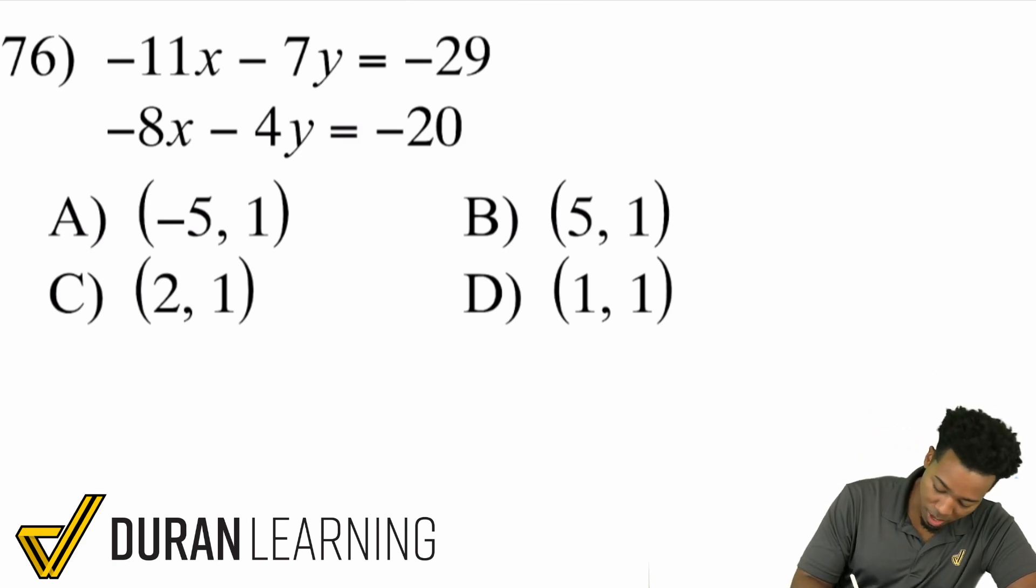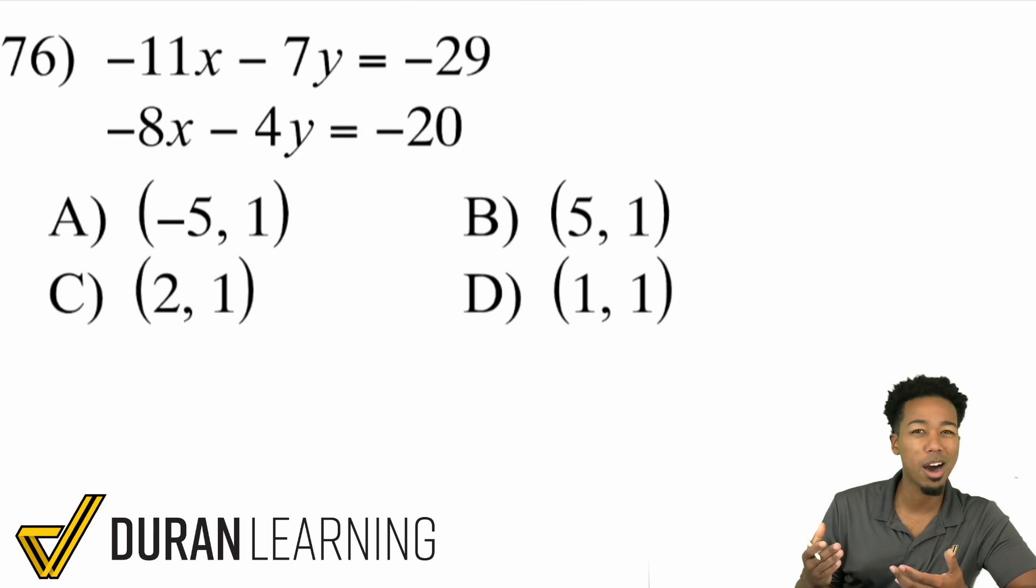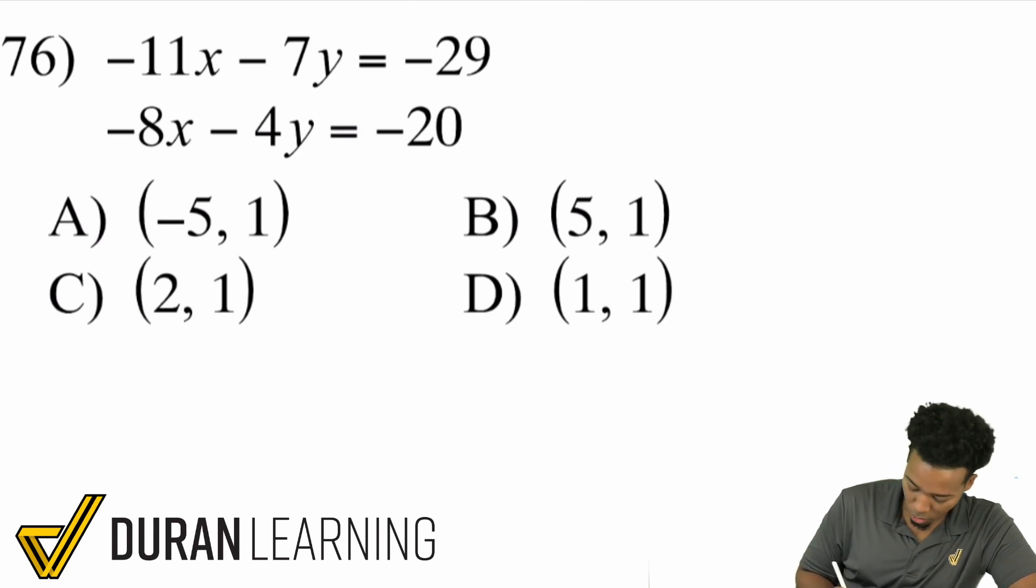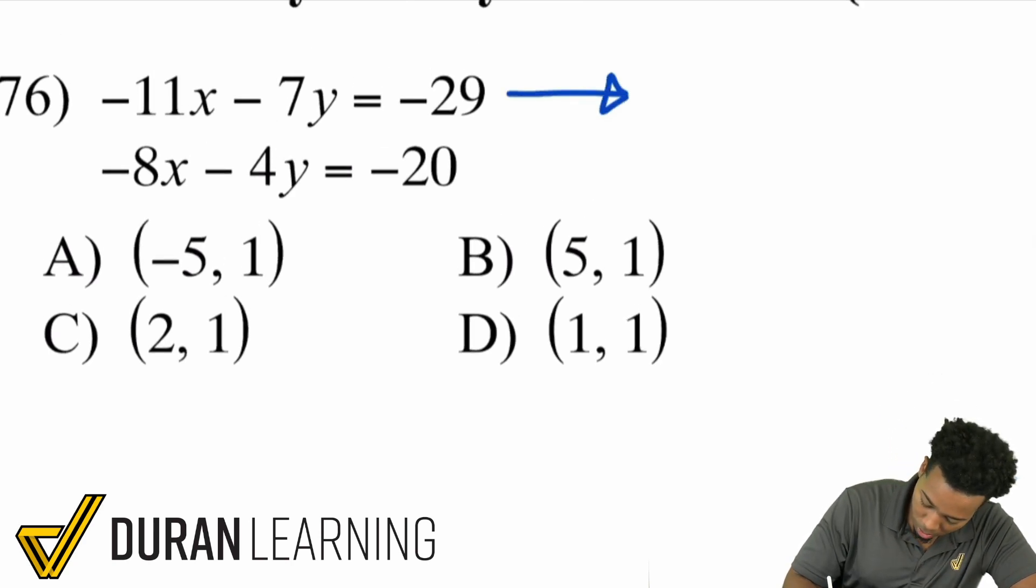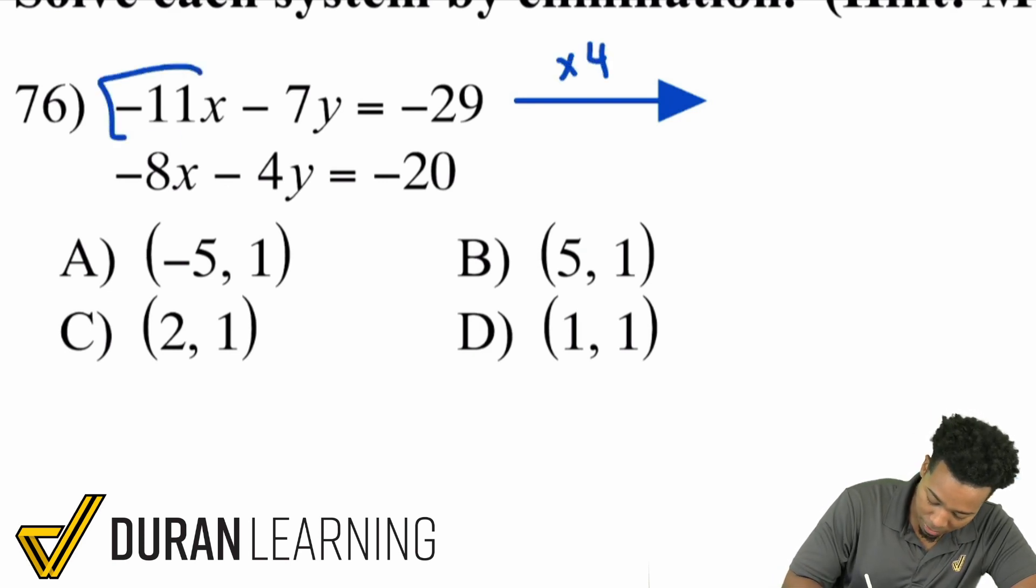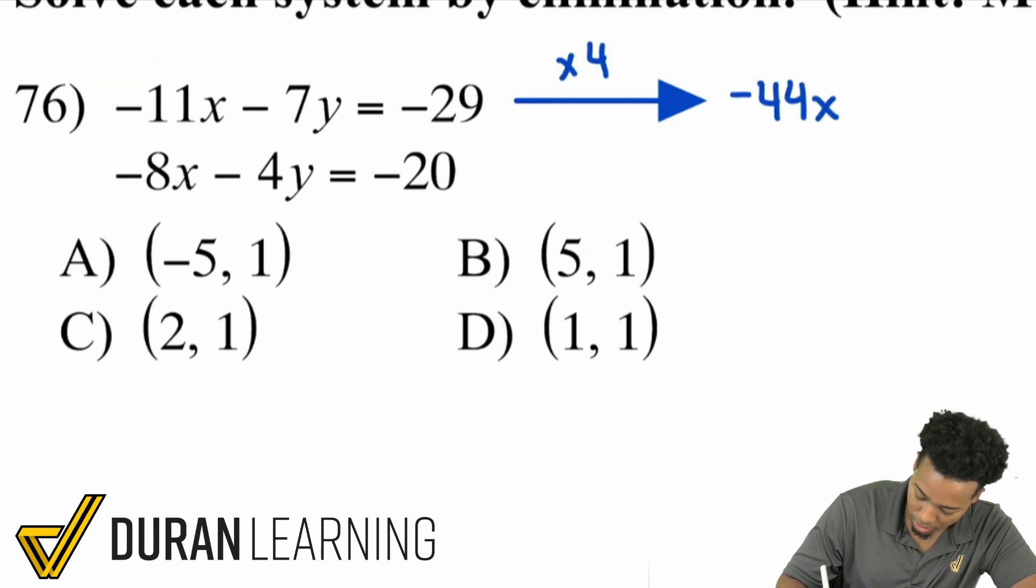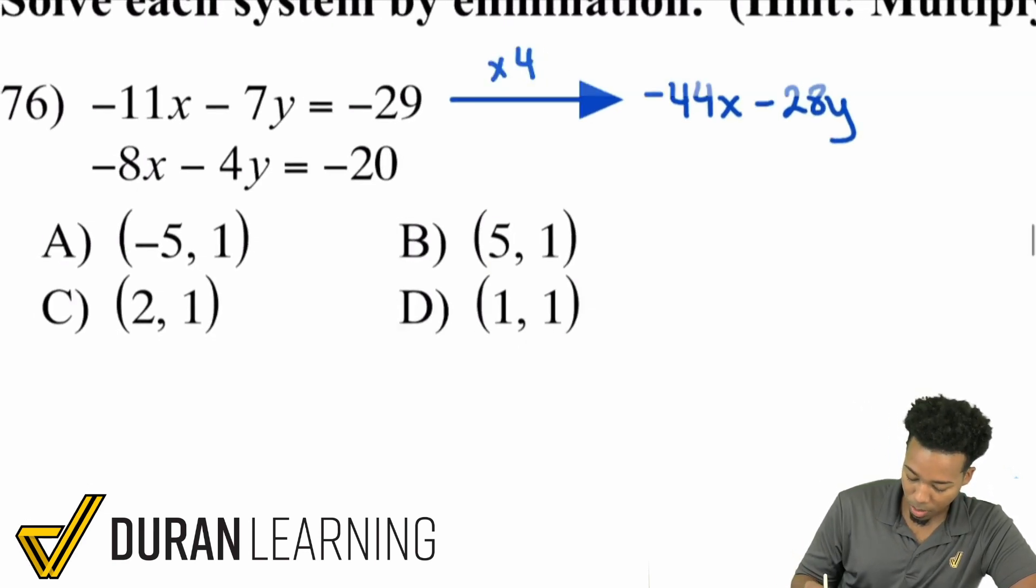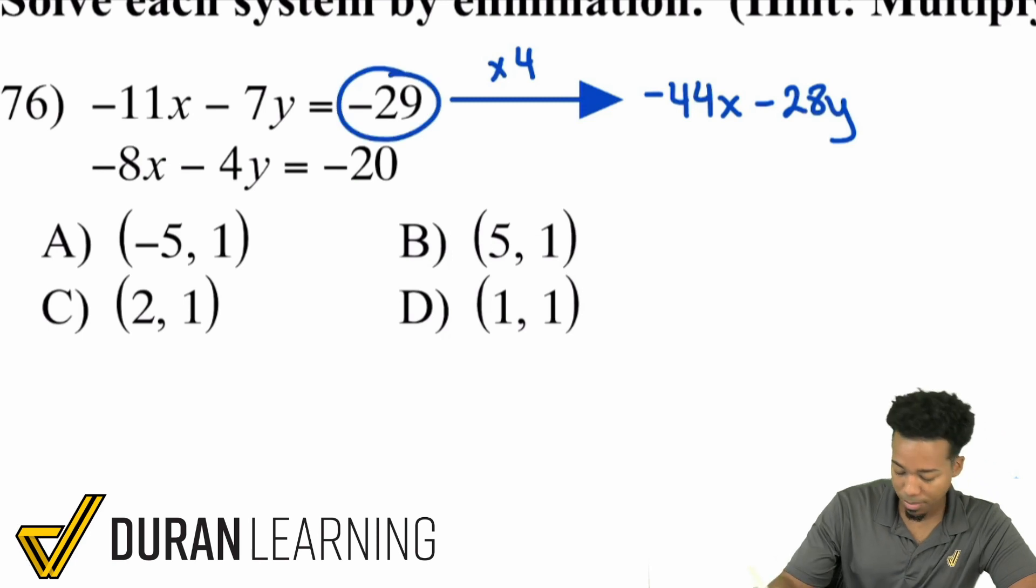So here we go. Notice that also we have a negative here and a negative there. So I'm going to want to make one of them positive. So what I'll do with this first equation, what I'm going to do is I'm going to multiply this first equation by a positive 4. Because when I do that, I'm going to have negative 11x times 4 is negative 44x.